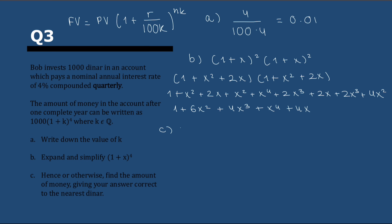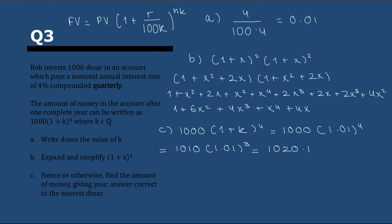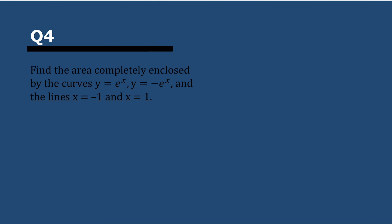In part c, they're asking us to find the amount of money that Bob has made. We know it's 1,000 times (1 + k)^4. Since k is 0.01, it's 1,000 times 1.01 to the power of 4. We multiply 1,000 by 1.01 four times: first 1,010, then 1,020.1, then 1,030.3, and finally 1,030.3 times 1.01 gives 1,040.7. To the nearest dinar, Bob will have 1,041 dinars.